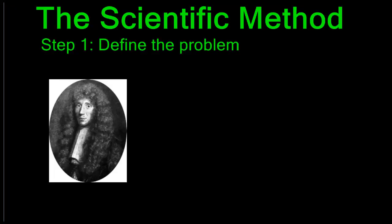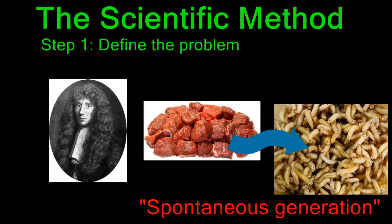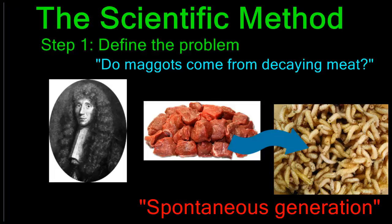In the time of Francesco Redi, people thought that living things could come from non-living things. For example, maggots, which are small worm-like bugs, could come from decaying meat. This idea is known as spontaneous generation. Redi knew that that was not true. It just couldn't be. So he decided to test this idea with an experiment. So he started the scientific method by defining his problem. The question that he asked was, do maggots come from decaying meat?